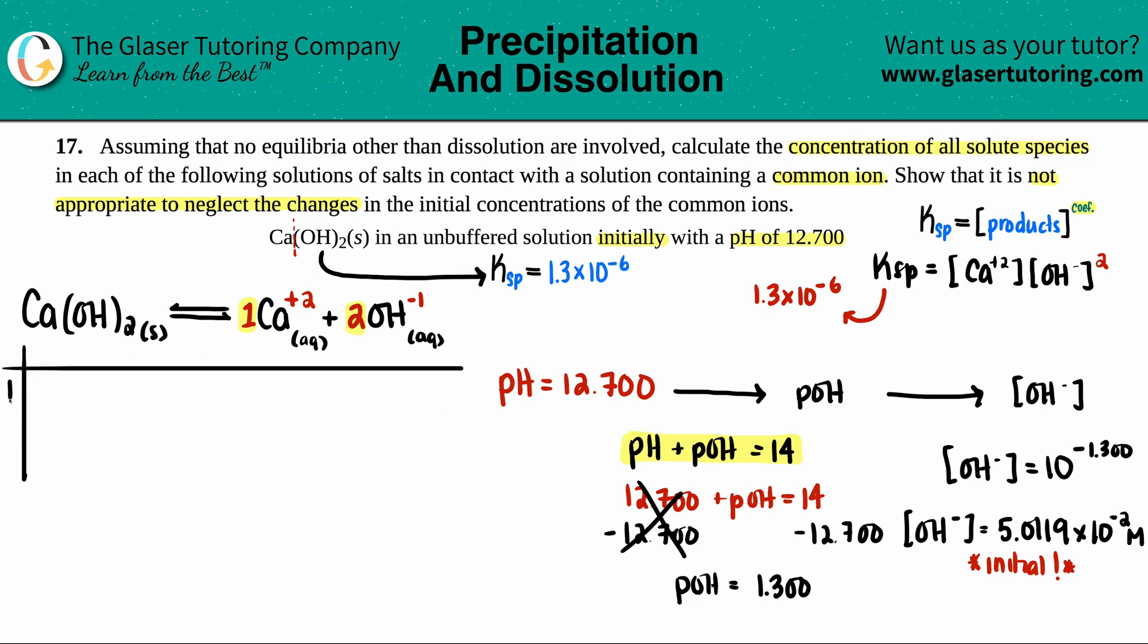Let's ice it out. Remember solids not included. Initial hydroxide concentration was the 5.0119 times 10 to the negative second. Didn't start off with any calcium. So zero. Now change in concentration. You could only go up from zero. So this would be plus X. Keep in mind that there's only one of them. And then the same thing here, plus X, but there's two of them. So this would be two times as much, plus two X. Combine your initials and your changes. Zero plus X is just X. And then this would be 5.0119 times 10 to the negative second plus two X.